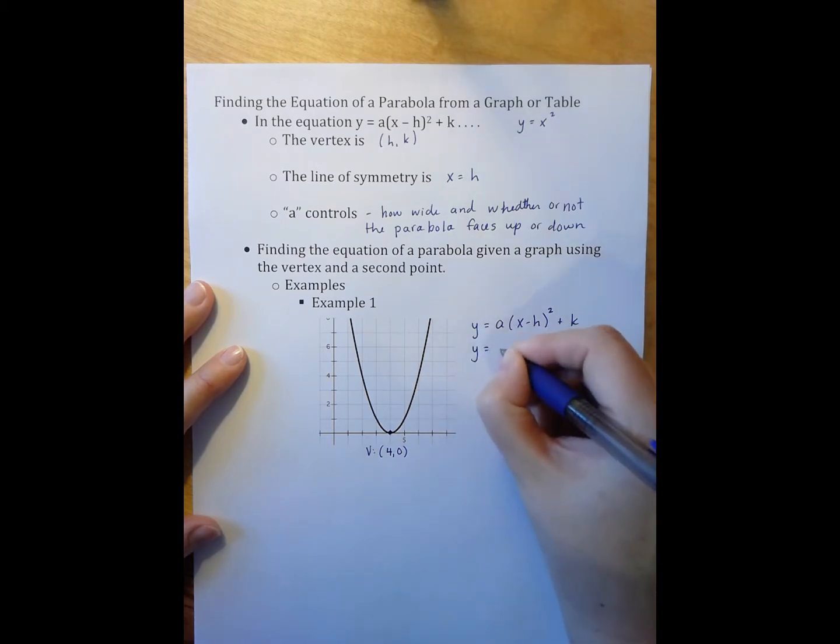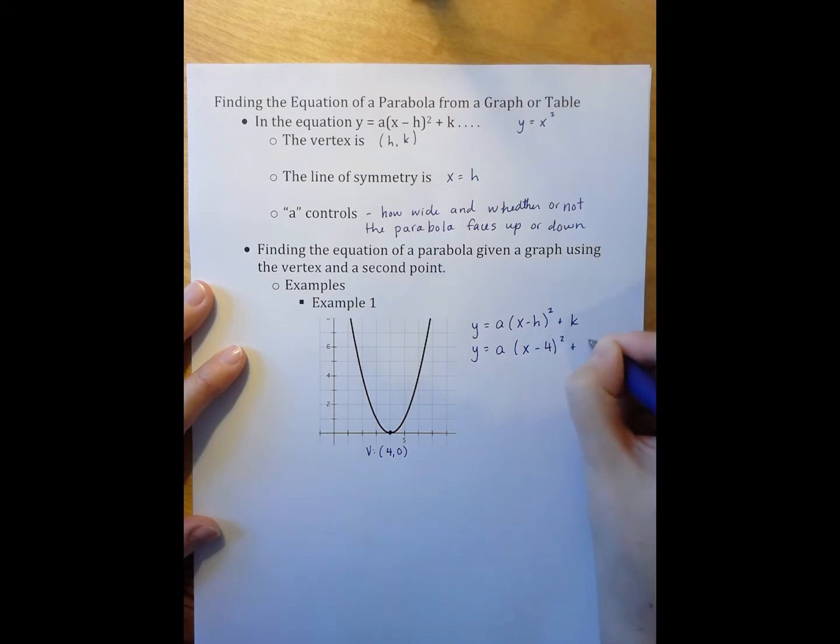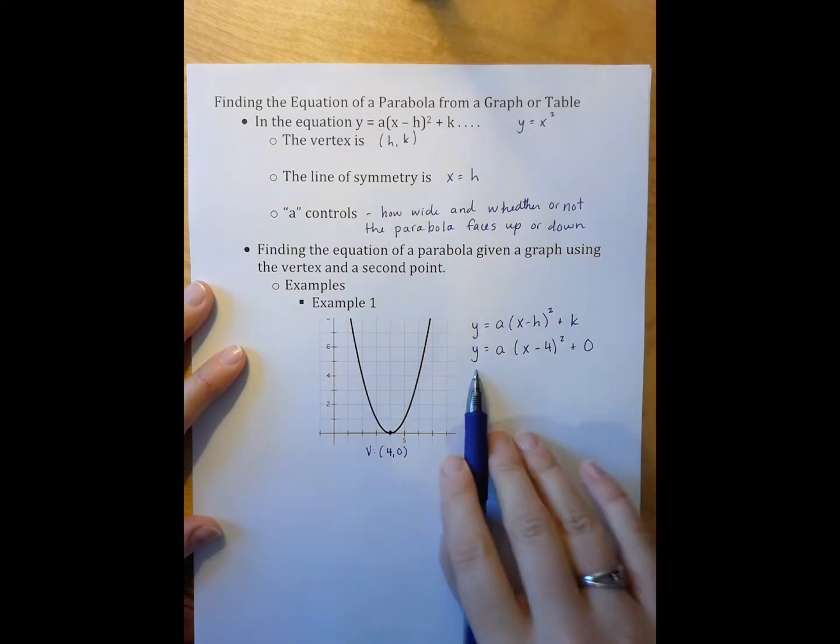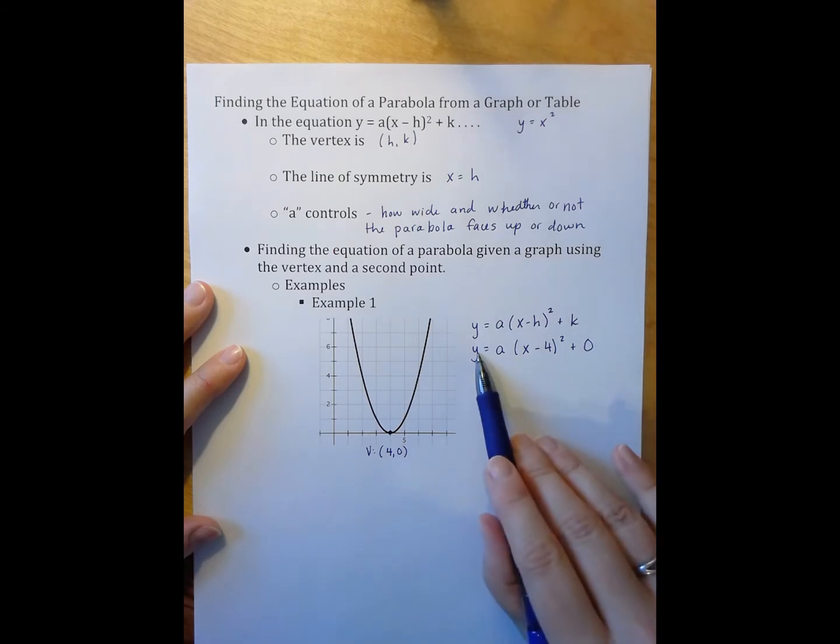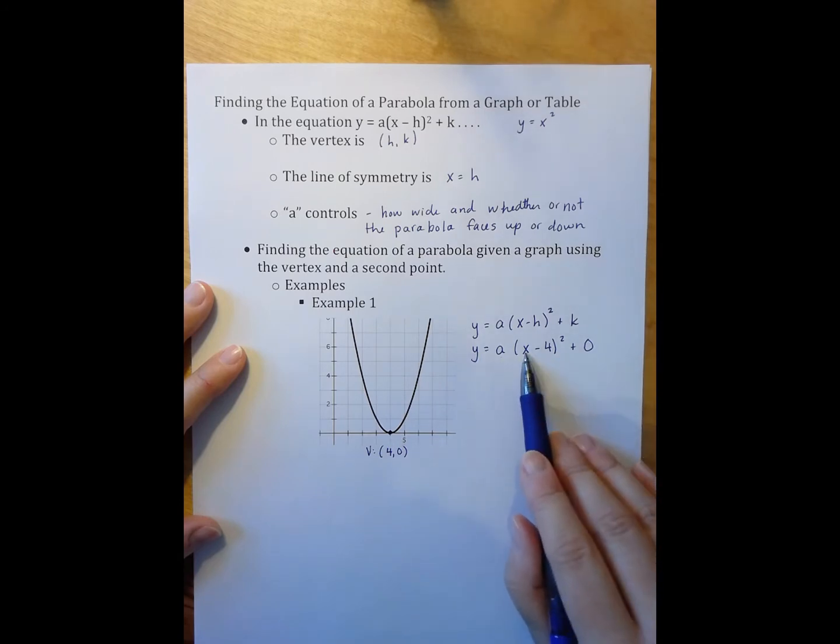And the first thing I can do now that I know the vertex is I can plug in the h and the k value. So I have y equals a times x minus 4 quantity squared plus 0, which means I don't have to write the equation plus 0, but I can. Now, we can see in this equation at this point, we have three variables: y, a, and x.